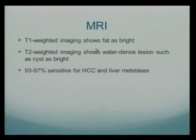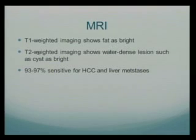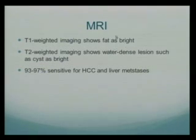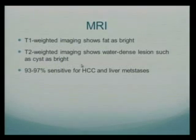For MRI, the important principle is that we have T1 and T2 weighted imaging. On T1 weighted imaging, fat will show up as bright — lesions containing fat will be bright. For T2, water-dense lesions appear bright. So for example, if you're evaluating a lipoma on an extremity, it will be brighter on T1 imaging. Cysts, which are water-dense, will appear bright on T2 weighted imaging.